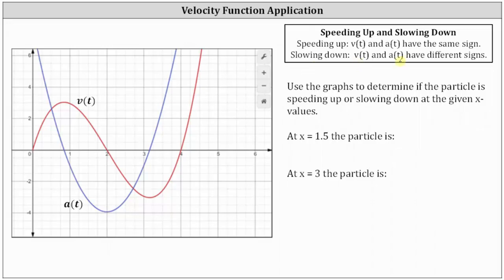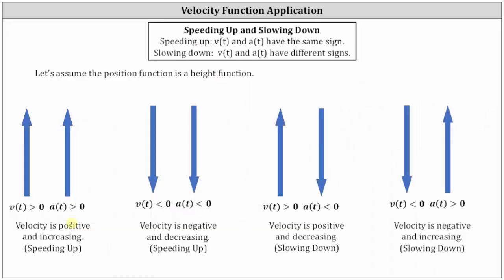Let's go over this in more detail. When v of t and a of t are both greater than zero, the velocity is positive and increasing. Remember, the acceleration function is the derivative of the velocity function, which means where the acceleration function is positive, the velocity is increasing, and where the acceleration function is negative, the velocity is decreasing.